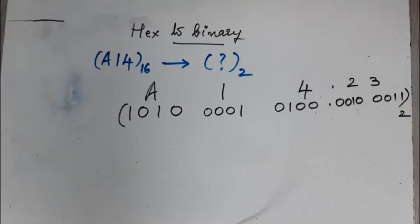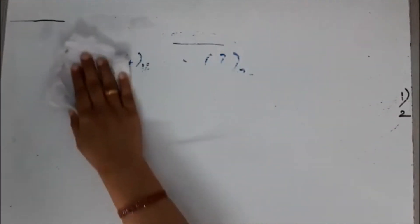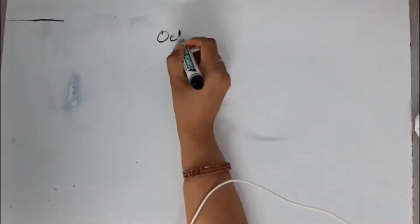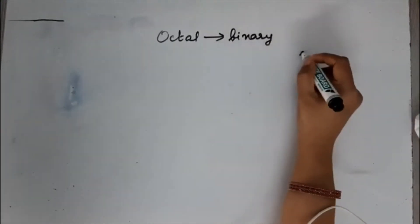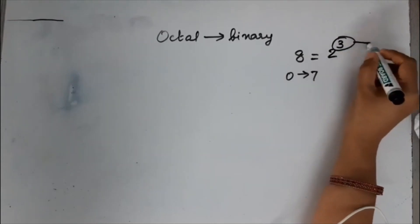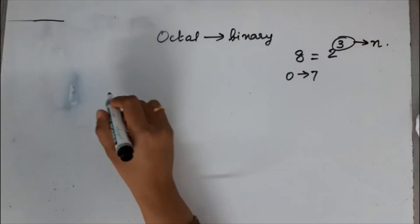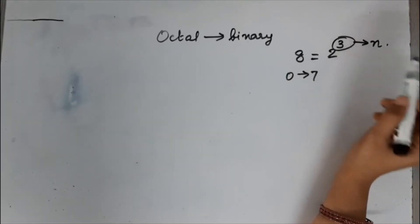So hex to binary is very simple. Similarly, you can convert octal to binary. In the case of hex, the largest number you can represent is 15, giving 16 numbers 0 to 15. In the case of octal, you have 8 numbers — 0 to 7 — and 8 equals 2 raised to 3, so n is 3. Just like hex to binary, octal to binary represents each octal digit using 3 bits.